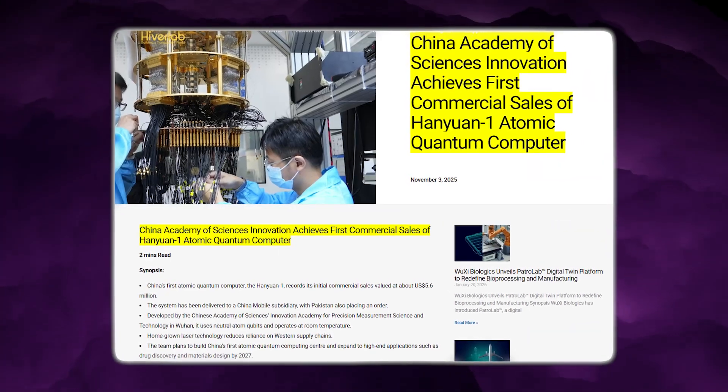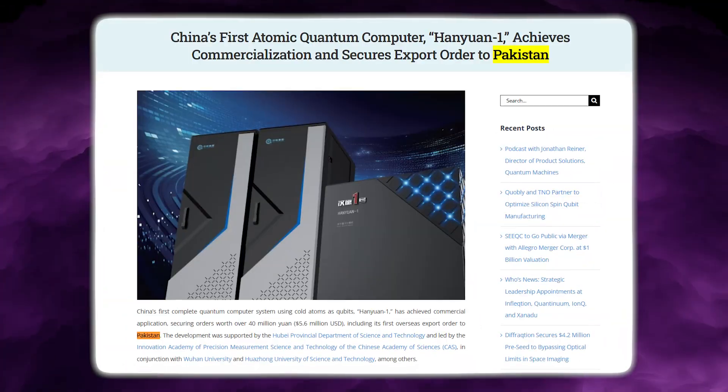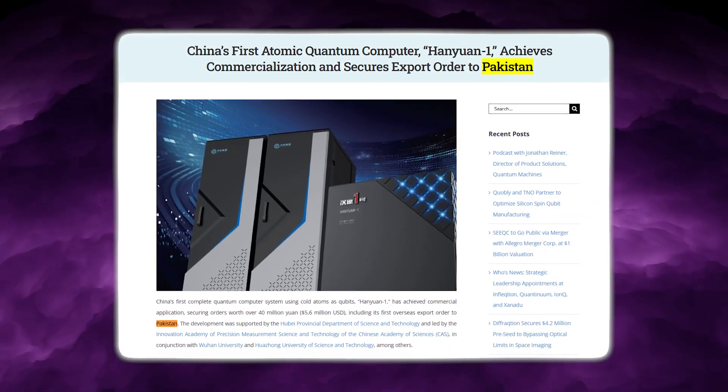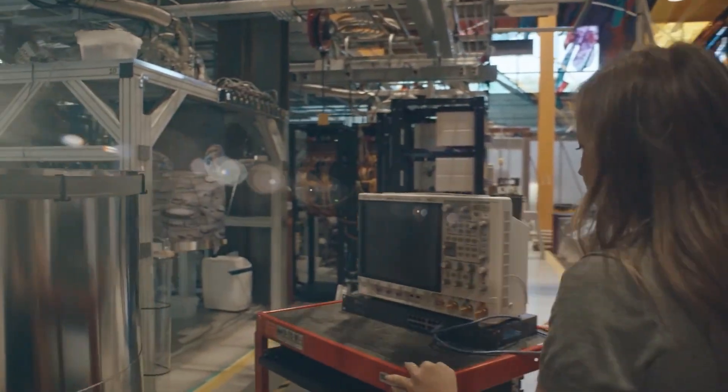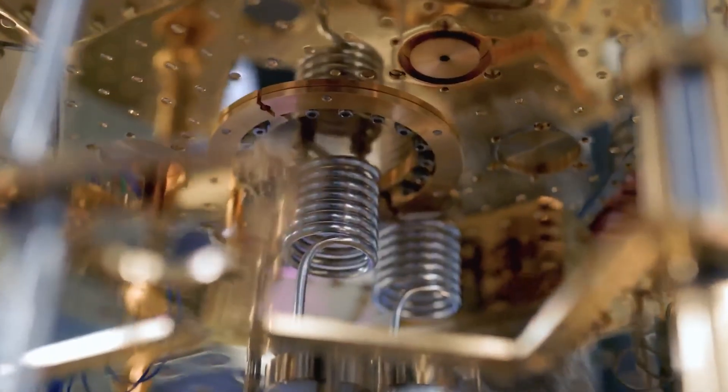Commercial validation followed. The first commercial Hanyuan-1 system was delivered to a subsidiary of China Mobile. Beyond domestic deployment, the system secured export orders from Pakistan. Exporting quantum computing hardware is not easy. It requires robust documentation, training, and confidence that the system can operate reliably outside its original environment. Only a small number of quantum systems worldwide have reached that stage.